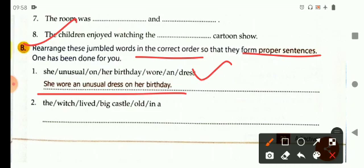In this way, you can correct or rearrange the next jumble words to form a proper sentence. Now, your words are, the witch lived big, castled, old, in a. The witch lived in a big old castle.